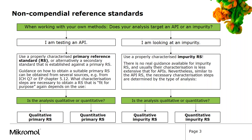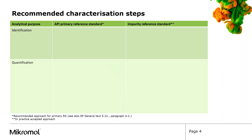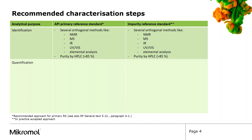Let's take a closer look at the characterization of the different reference standards. For a qualitative reference standard, the identity of the material must be ensured. For both primary API reference standards and impurity reference standards, it is recommended to verify the identity by several orthogonal methods. Not all listed methods need to be applied, but I would recommend doing at least three, for example NMR spectroscopy, mass spectrometry, and IR spectroscopy.